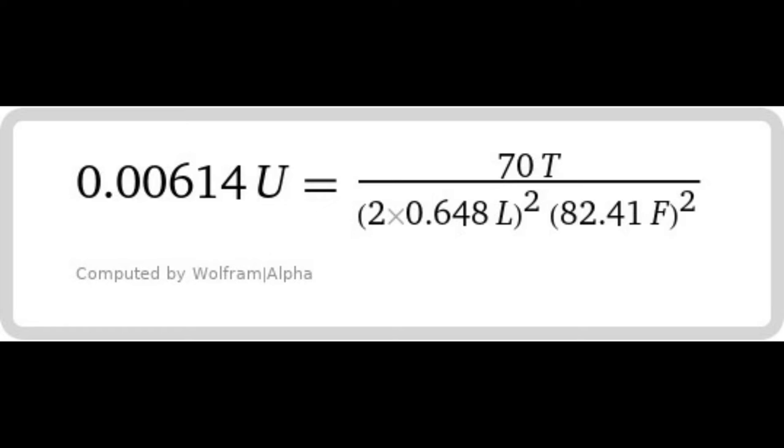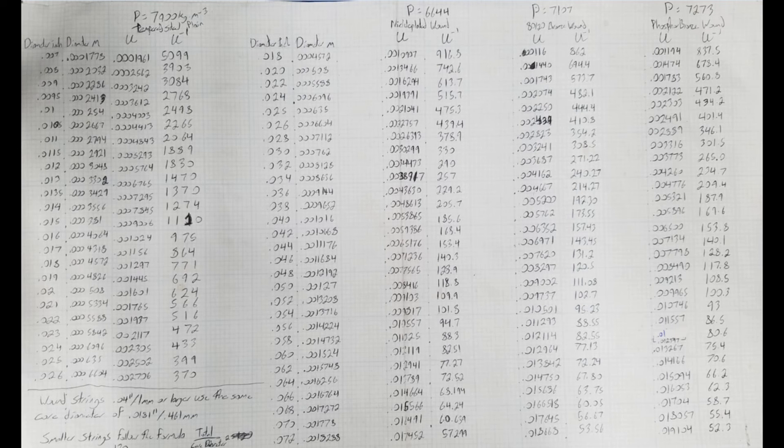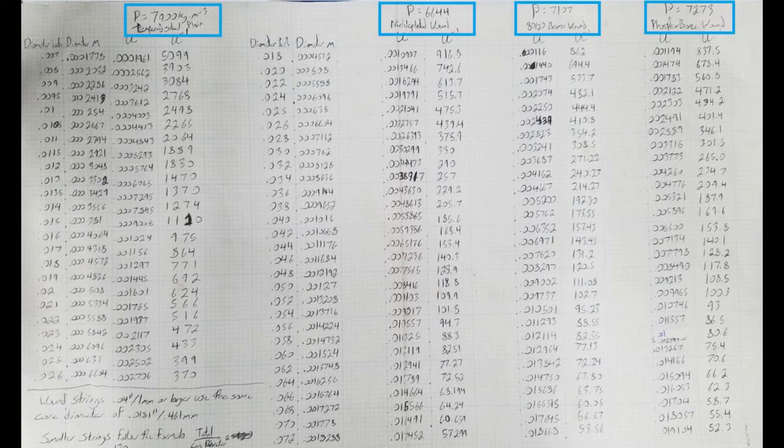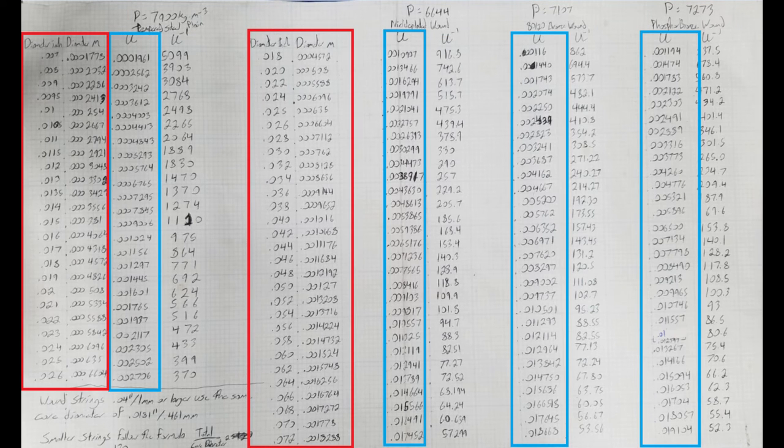Then, since we have this value, we now refer to this chart I made. This chart gives you four string options, and the mass per unit length, or linear density, for each available diameter. The left portion shows the values for plain steel strings, and the remainder shows the value for three types of wound strings.